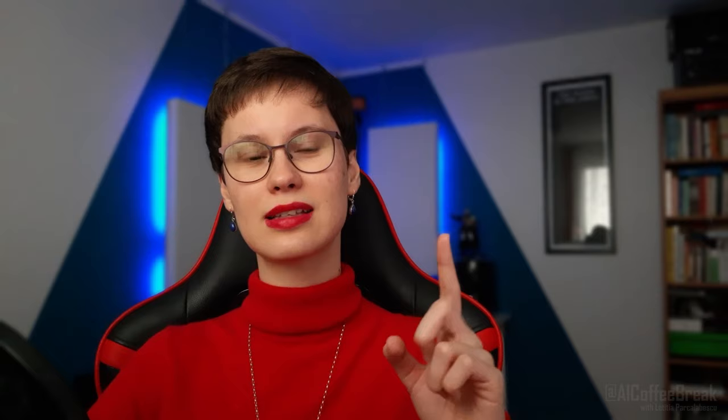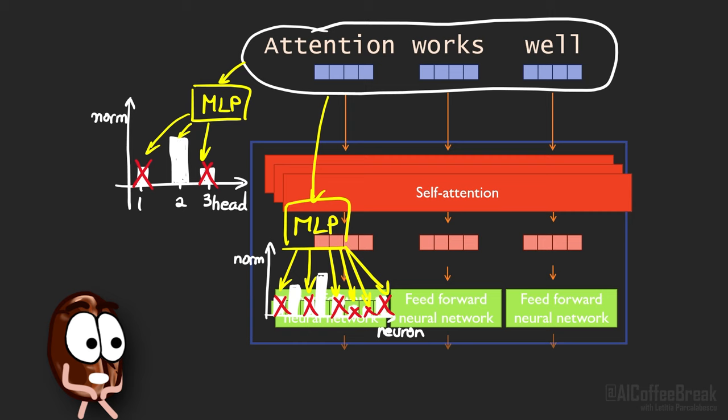But how does it come that the time these small sparsity predictor networks need to run their decision does not exceed the time the layer would have done that computation in the first place? Well, it's because the authors executed the sparsity prediction for the MLP while the attention layers were still computing their outputs in parallel.